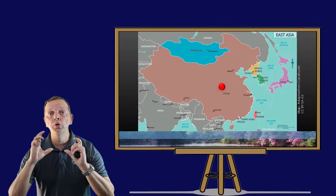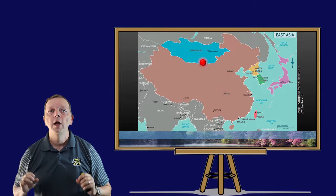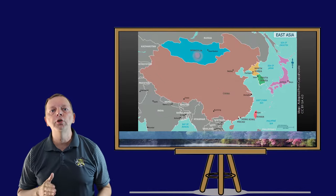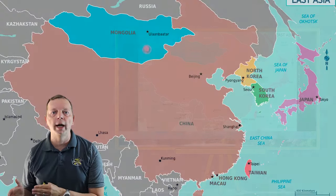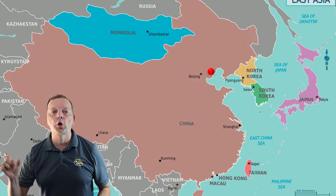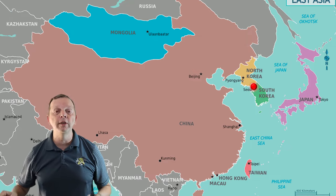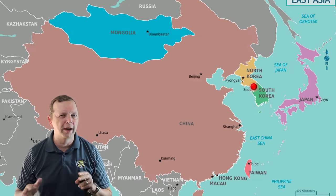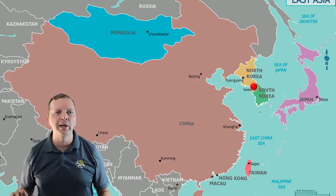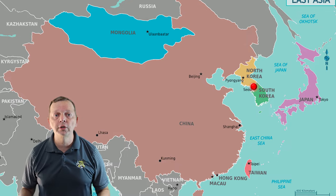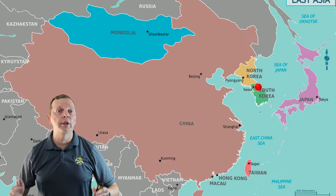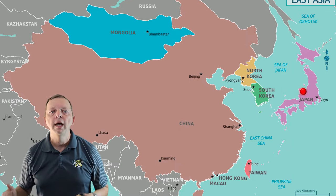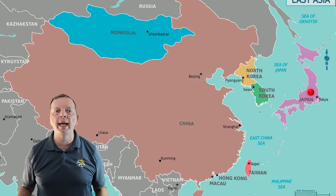To the central north of China, we find the homeland of the Mongols, Mongolia. To the east of China, we find the Korean Peninsula, where we're going to find North and South Korea. Across the Sea of Japan, which the Koreans call Tonghae, meaning the East Sea, we find Japan.